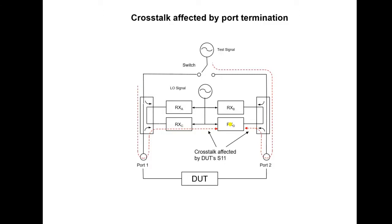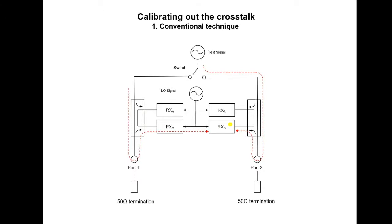Let's have a look at how we can calibrate out the crosstalk. The conventional technique is shown in this diagram. We terminate ports 1 and 2 with, for example, 50 ohm terminations, and then we measure the crosstalk.